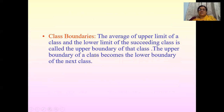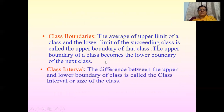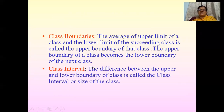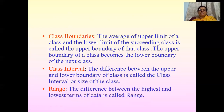The upper boundary of a class becomes the lower boundary of the next class. Class interval: the difference between the upper and lower boundaries of the class is called the class interval, or the size of a class. The range: the difference between the highest and lowest terms of the data is called the range.